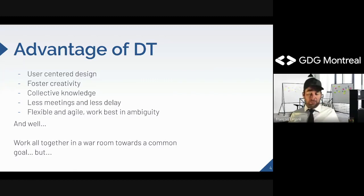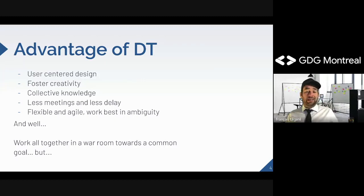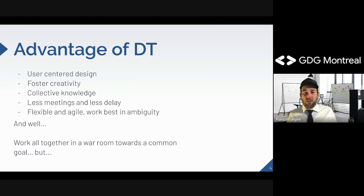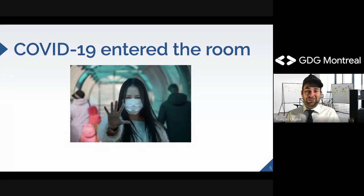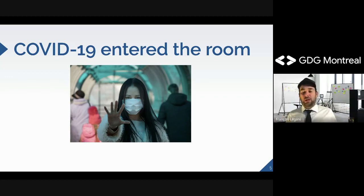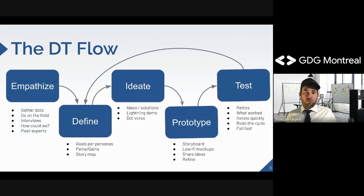Design thinking is really flexible and agile, and the output could be the foundation of a backlog in an agile process. This process works super well for ambiguously defined projects or solutions that are complex and hard to grasp. If it's a cookie-cutter solution, you don't need design thinking. The main challenge is that this is done working all together in a room toward a common goal — but COVID changed a lot of things, so we'll see how to cope with those constraints.